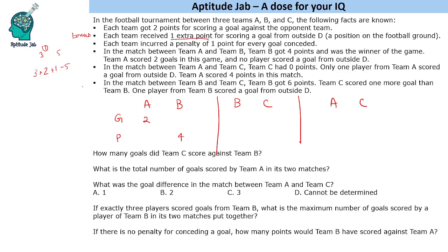Let us understand the scoring logic. If a team scores N goals, they get 2N points. If the goals conceded (against) is also N, they lose N points. So if 'for' equals 'against', the net gain is N points — you net one point per goal scored when goals are equal on both sides.